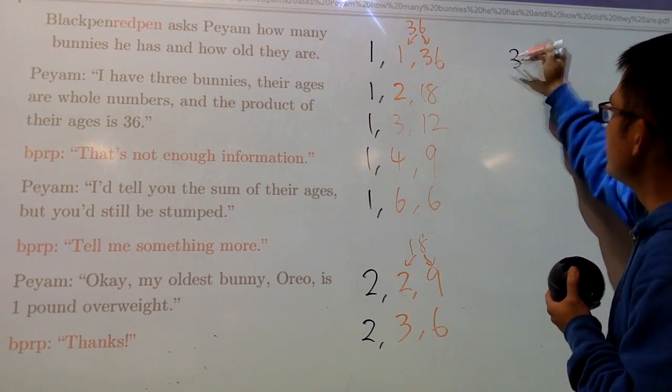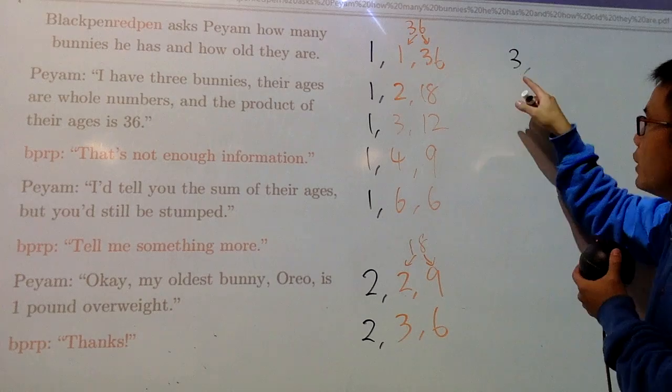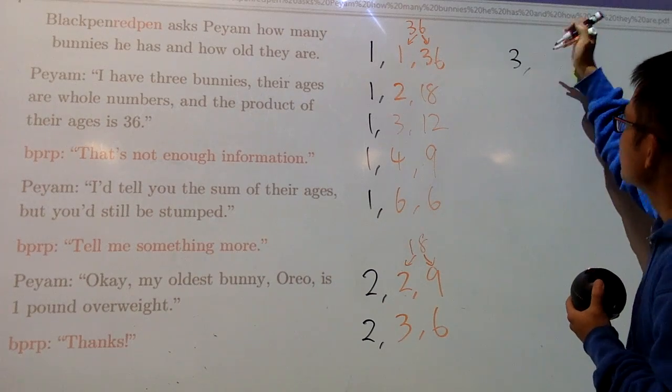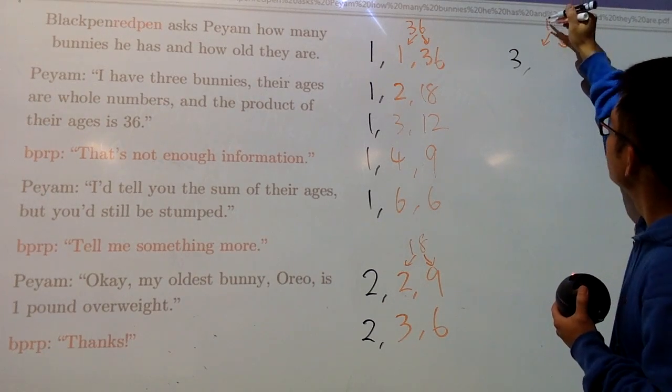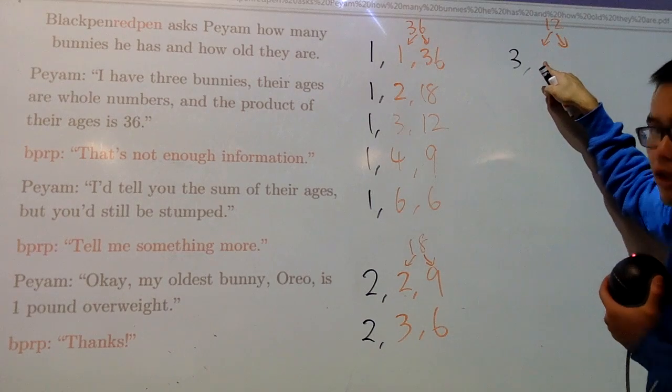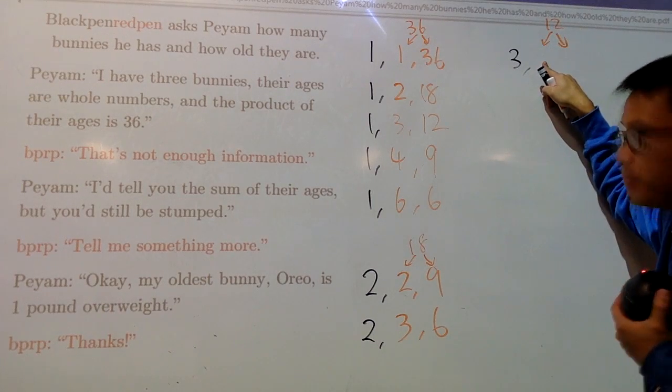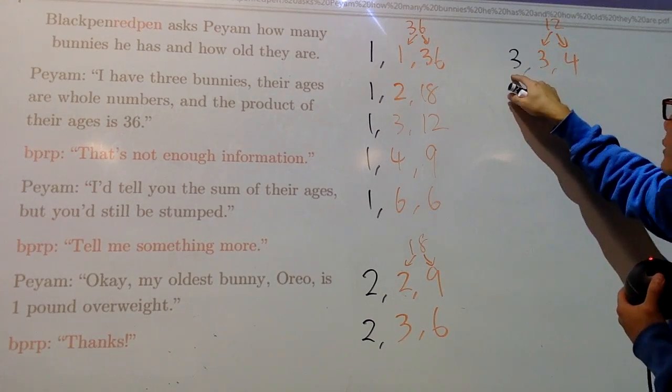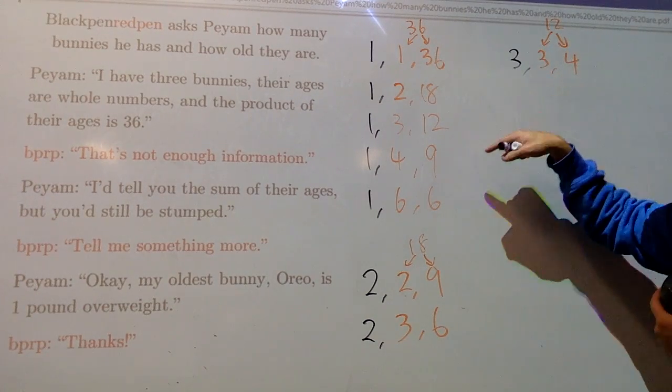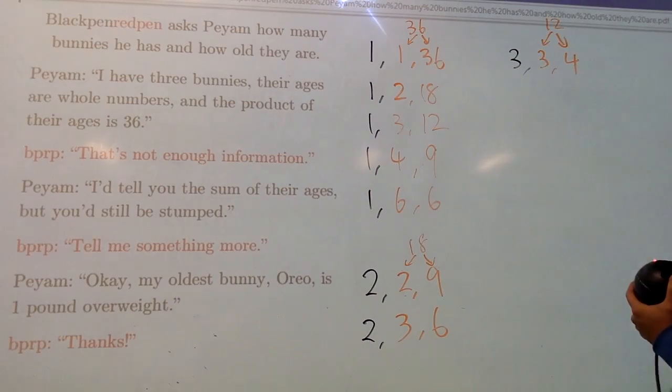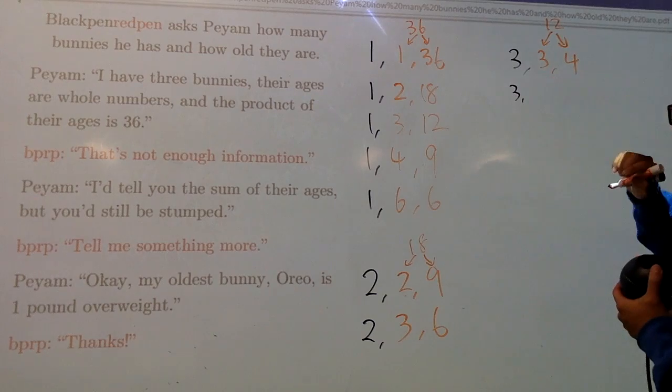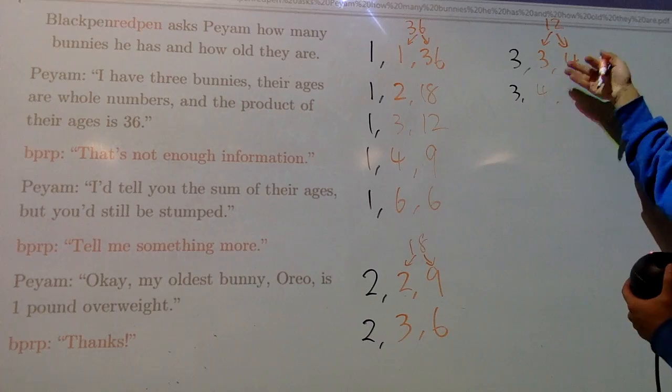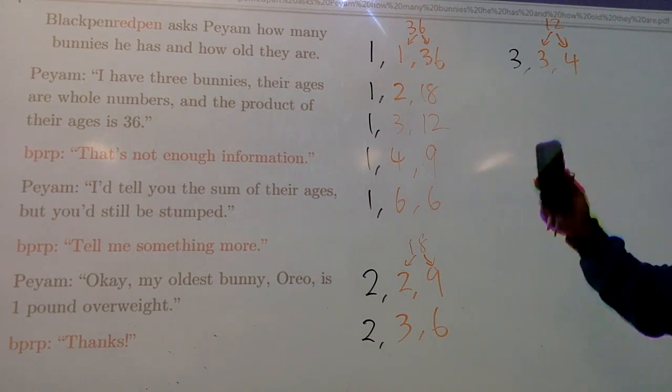Next, what if the youngest one is 3? Is that even possible? If we have 3, that means I have to find out 2 numbers, so they multiply to be 12. Let's see. I know that I am not going to put on 1, I am not going to put on 2, because 3 is the youngest bunny. I can put on 3. In that case, I have to put on 4. 3 times 3 times 4, altogether that's 36. And if I do another one of them is 3, and then next, if I put on 4, well, 3 times 4 is 12, and I have to put on 3. So this is the same as that, so we don't have that. And that's pretty much it.